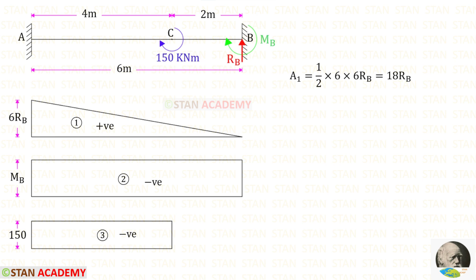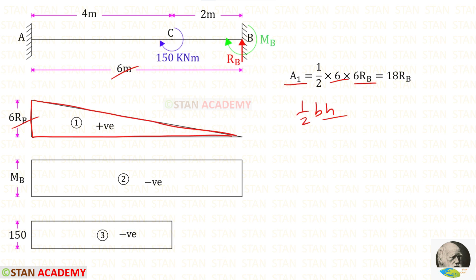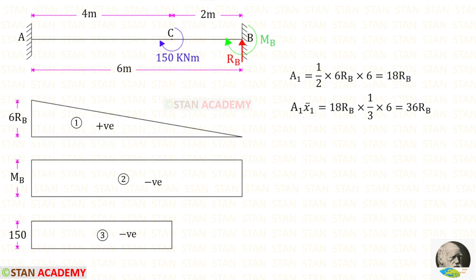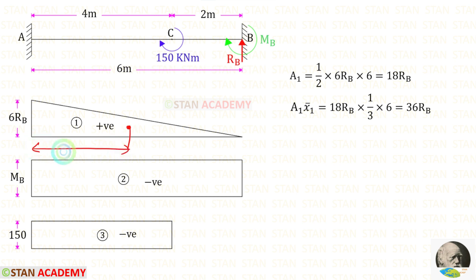Now let us find Area 1. It is a triangle, so the area is half times base times height. The breadth is 6 and the height is 6Rb, giving Area 1 = 18Rb. For the centroid distance x̄₁ about point A, the centroid of this triangle is at one-third of the breadth from the apex, so 1/3 × 6 = 2. Therefore Area 1 × x̄₁ = 18Rb × 2 = 36Rb.